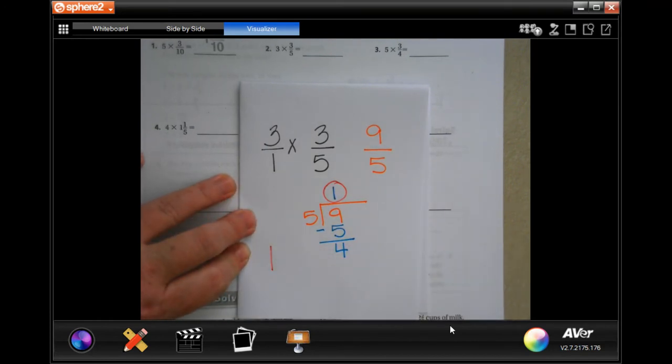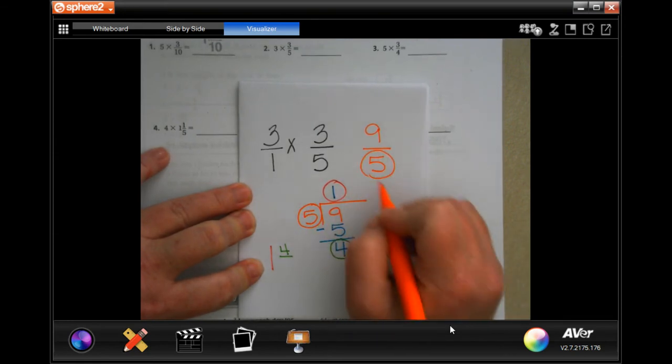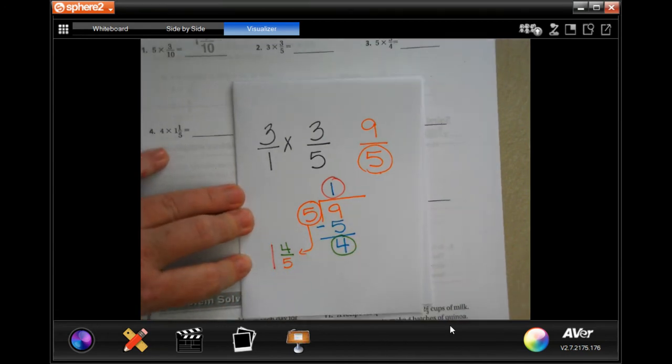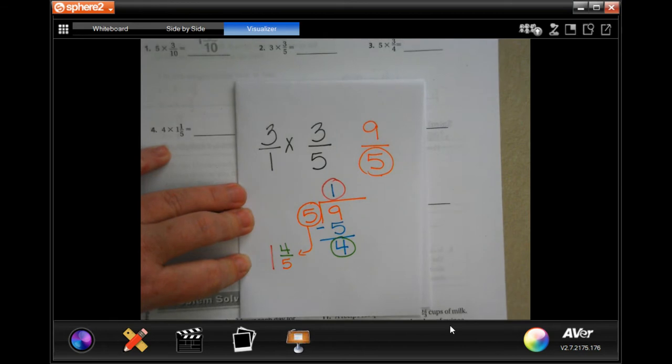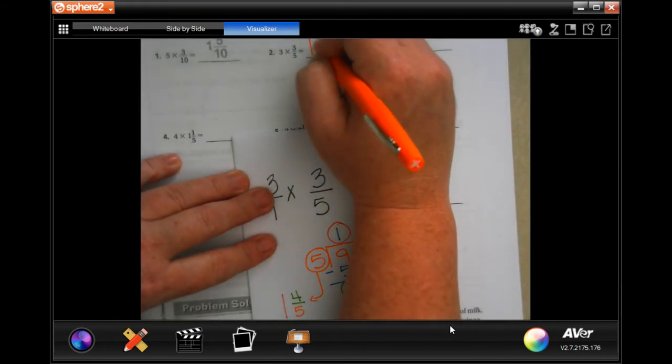And I'm going to go 5 goes into 9 one time, 1 times 5 is 5. When I subtract, I get 4. So now I'm going to show y'all how I'm going to get my mixed number. This is my whole number, this is my numerator, and this, my original denominator, that stays. So your answer for this one is going to be 1 and 4 fifths.